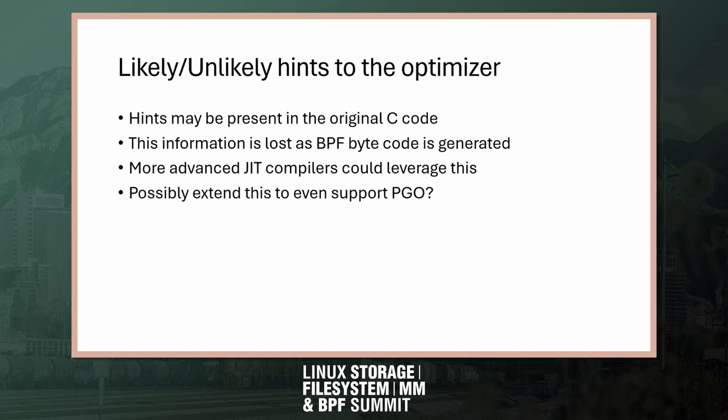One of the other interesting things is that the developer can provide hints in the form of likely and unlikely to the compiler, which allows the compiler to produce more optimal code. But this information is essentially lost as the C program is translated to BPF, where this information could potentially be useful to the JIT compiler, but it is not available simply because it's not contained in the ELF file or any form.